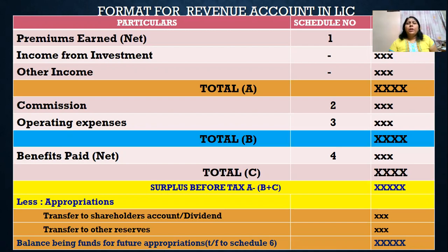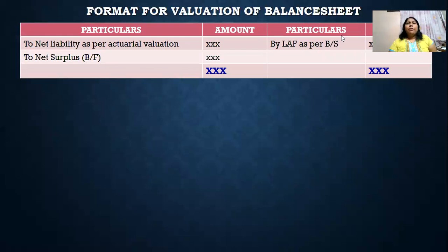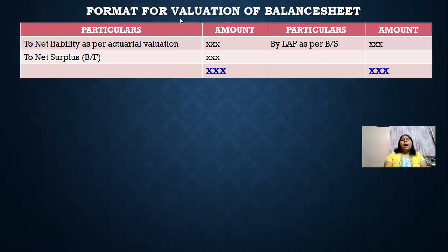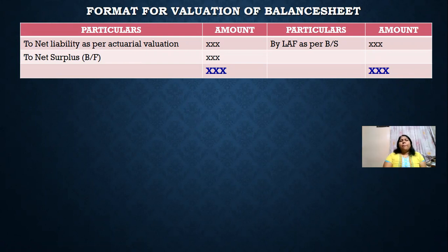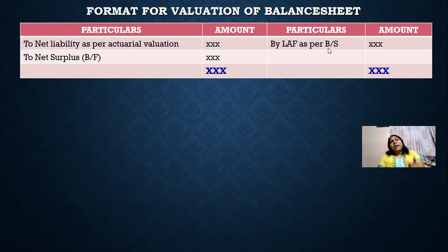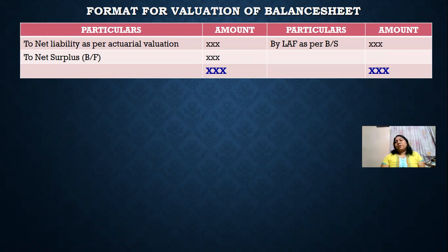In this video, you will learn how to prepare the format for valuation of a balance sheet. We have a format like a ledger, with a debit side and credit side. On the debit side, we have the net liability as per the actuarial valuation of the insurance company. On the credit side, we have the life assurance fund as per the balance sheet. Sometimes the problem may have an opening life assurance fund, and you need to show only the closing life assurance fund. To calculate the closing life assurance fund, you combine the opening life assurance fund along with the surplus.